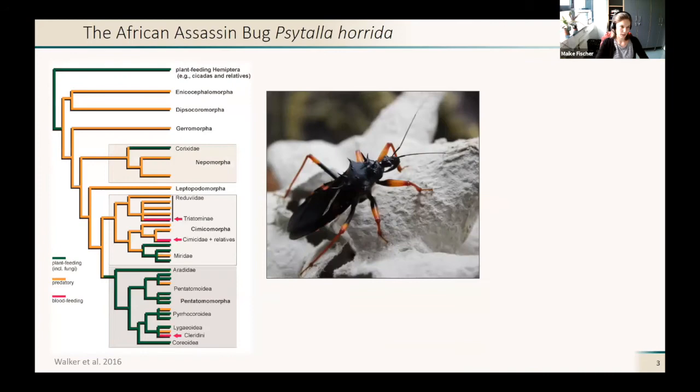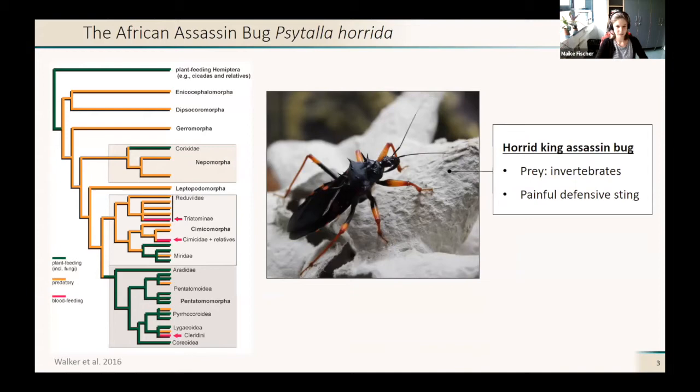My research organism is the African assassin bug Psythala horida, also called the horrid king assassin bug. It's really large and looks pretty nasty, and it preys mainly on invertebrates. It can have a very painful defensive sting, which I fortunately have not experienced yet, but it's probably really painful.